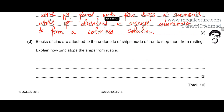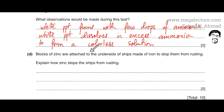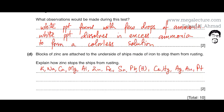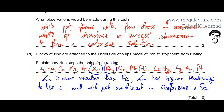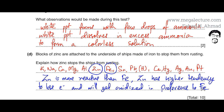The final part asks how blocks of zinc attached to the underside of iron ships stop the iron from rusting. From the reactivity series, zinc is higher than iron, meaning zinc is more reactive and loses electrons more easily. Therefore zinc gets oxidized in preference to iron — this is called sacrificial protection. Zinc rusts in place of the iron, so the ship does not rust.